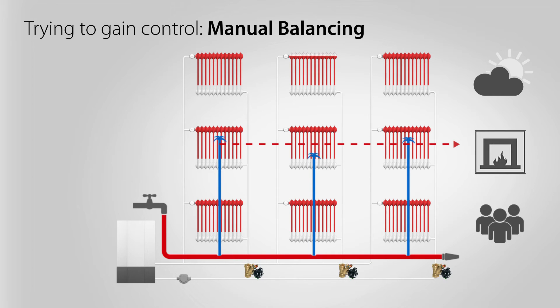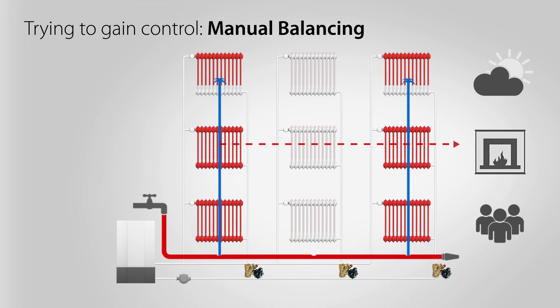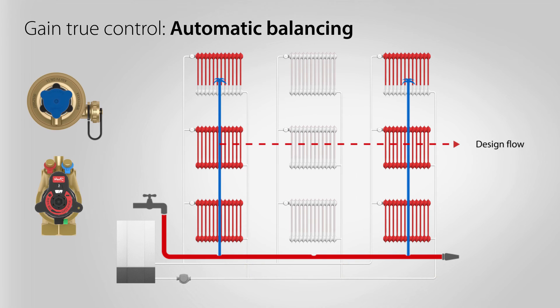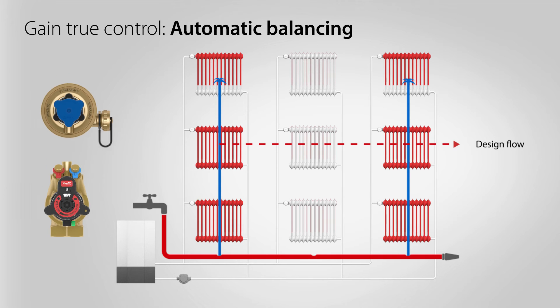A heating system becomes a variable flow system when partial load conditions occur. The supposedly balanced system will again have poor balance and water distribution. Manual balancing valves are not the correct choice to gain control. To really solve the hydronic challenges, an automatic balancing solution with differential pressure control is required.